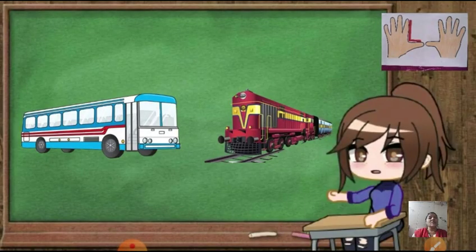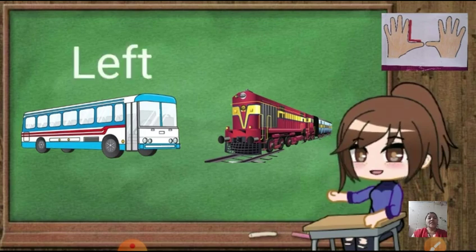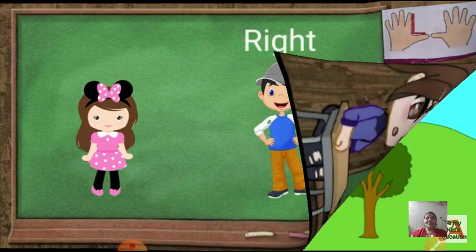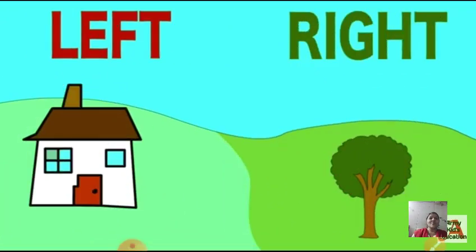Now look here, here we can see two vehicles - a bus and a train. Can you all tell me which object we can see to your left? In the left, we can see a house. And to the right, we can see a tree.